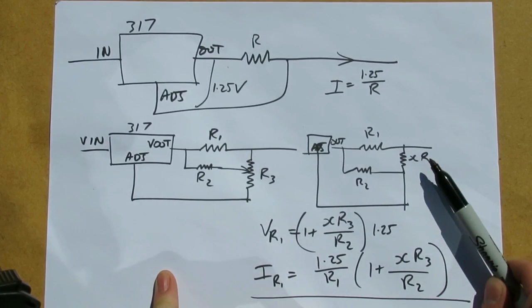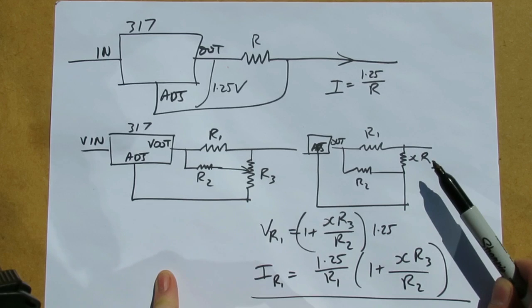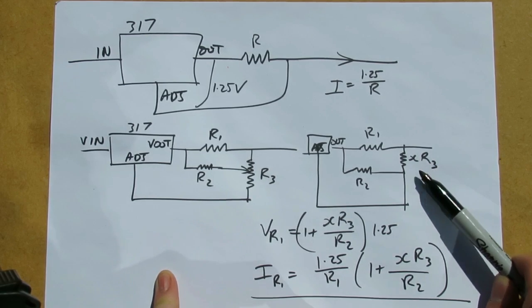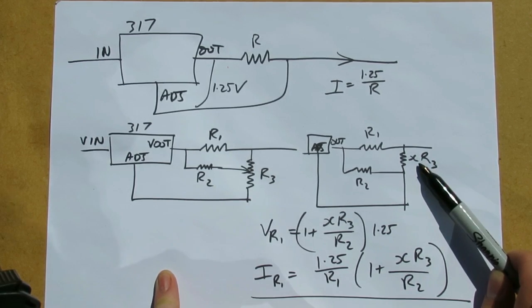So by varying the potentiometer, we vary X from 0 to 1.